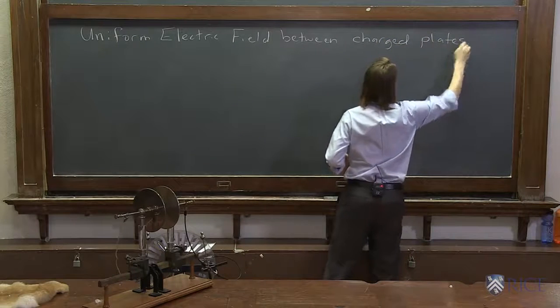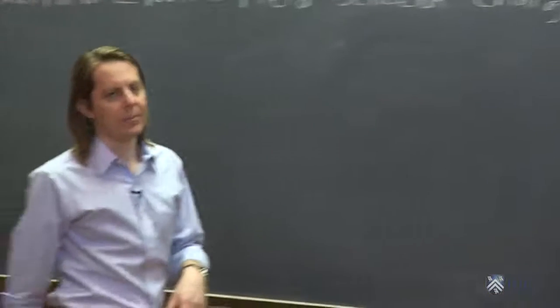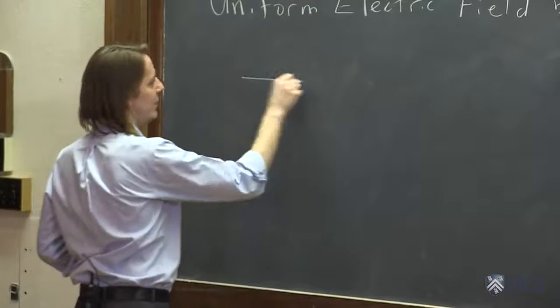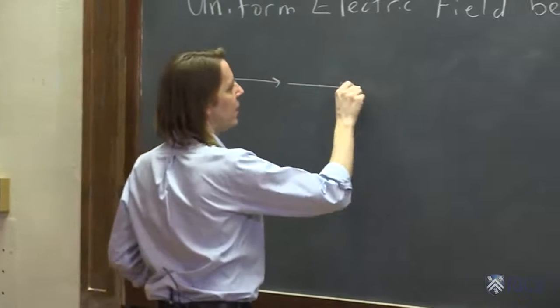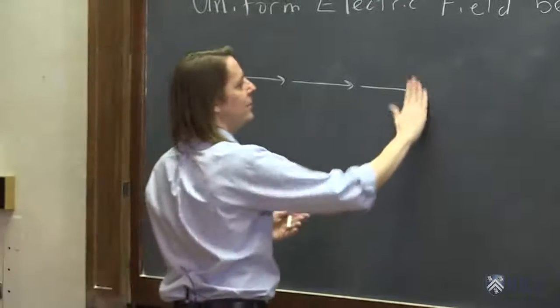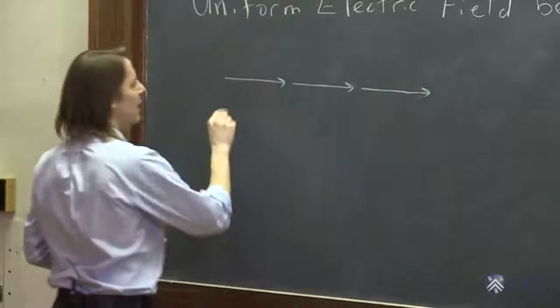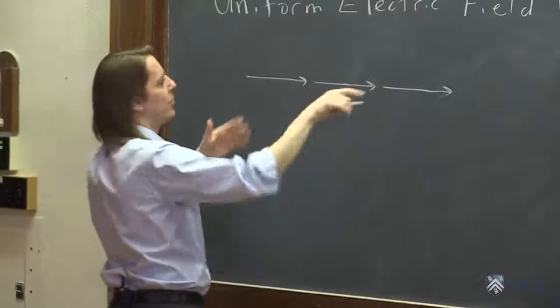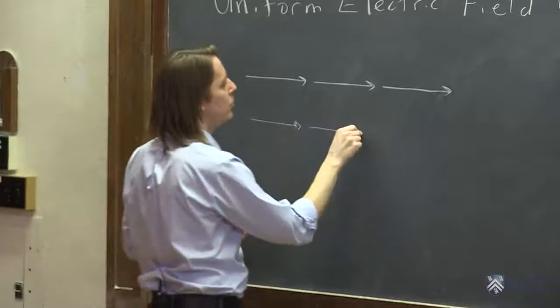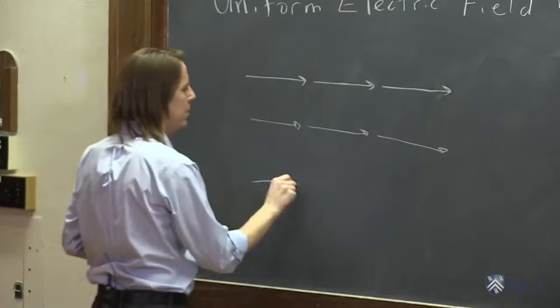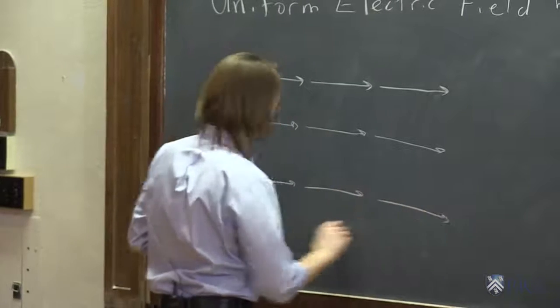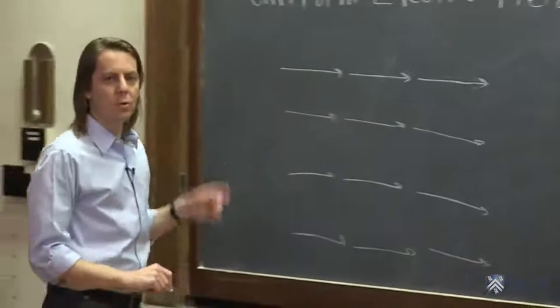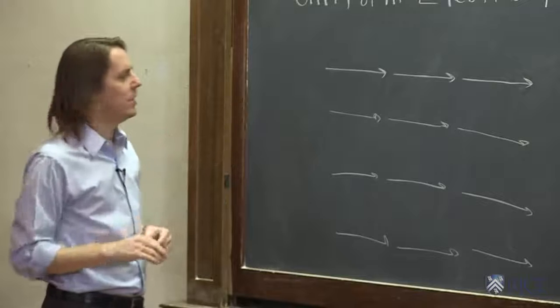So let's take this one idea at a time. First of all, let me draw you a uniform electric field. All that means is that it's an electric field that is constant. If I make these vectors all the same size, there you go, constant. So here, the electric field is a certain magnitude, say two newtons per Coulomb, and it points to the right. And everywhere you go, it's two newtons per Coulomb pointing to the right. That is a uniform electric field because it's constant. It doesn't change. That's what makes it uniform.